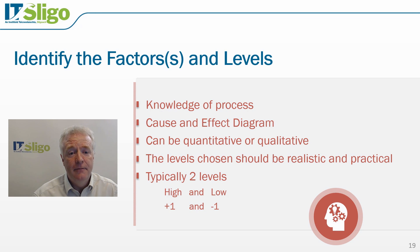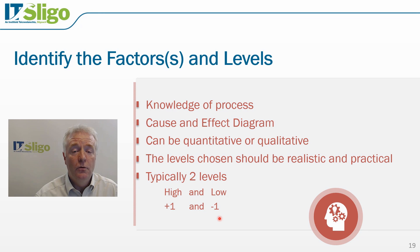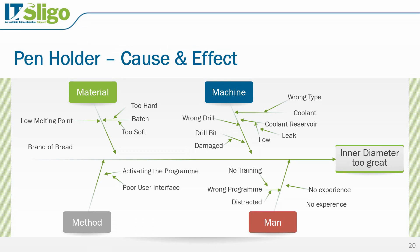We will typically evaluate factors at two levels, referred to as high and low. For example, 100 degrees could be the low level while 120 degrees is the high level. We more commonly refer to these via coded variables: minus one for the low level and plus one for the high level. Taking the pen holder example and its cause and effect diagram, we may find the inner diameter is too great and want to experiment with coolant, the coolant reservoir, and the drill bit to achieve the target inner diameter with little variability.